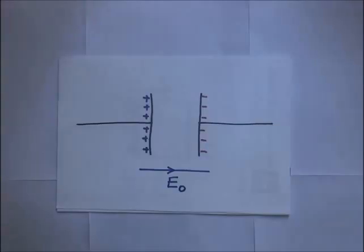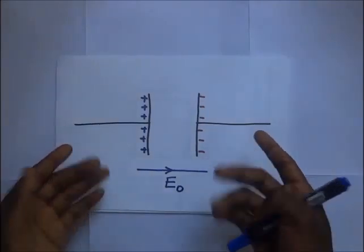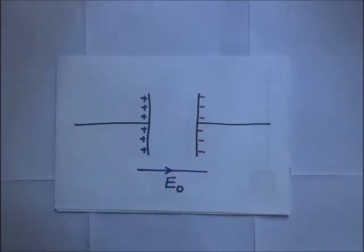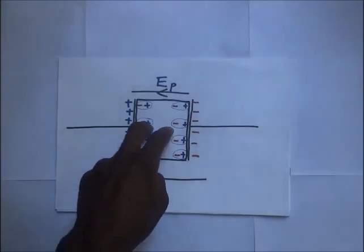Now let's examine the effect of a dielectric on the capacitance of a parallel plate capacitor. When we insert a dielectric into the gap of the parallel plate capacitor, how does it affect the capacitance? We start with two plates — one negatively charged and one positively charged — with no dielectric between them, creating a field E₀ acting between the plates.